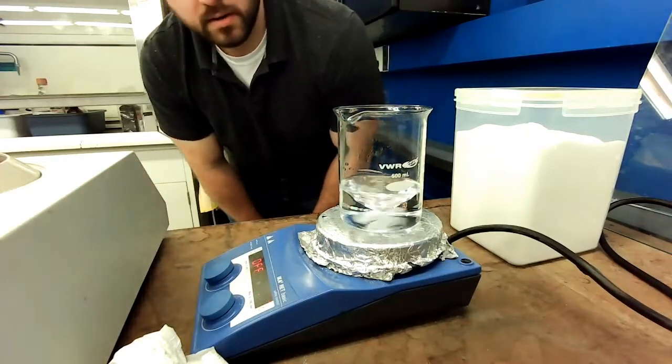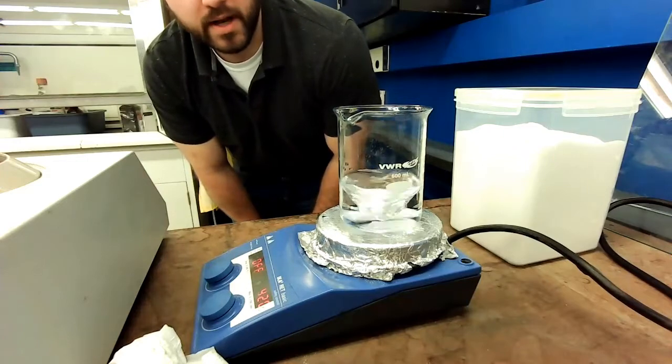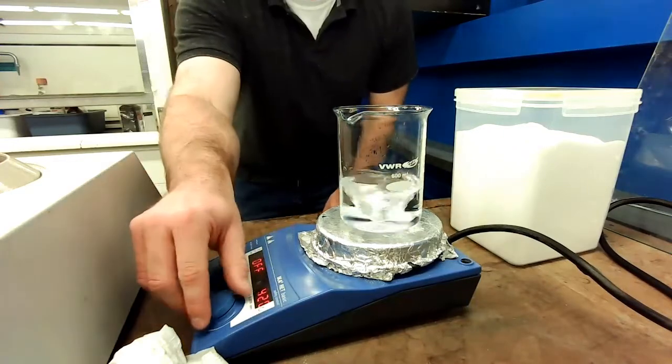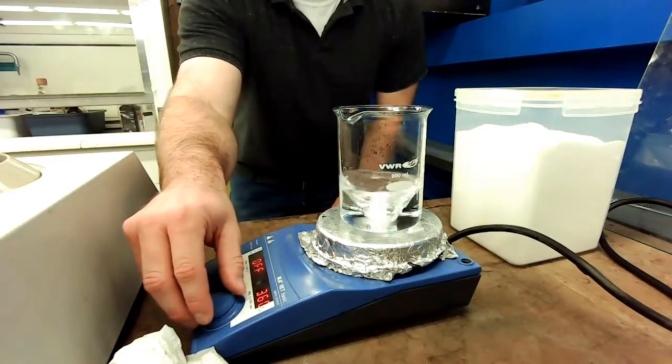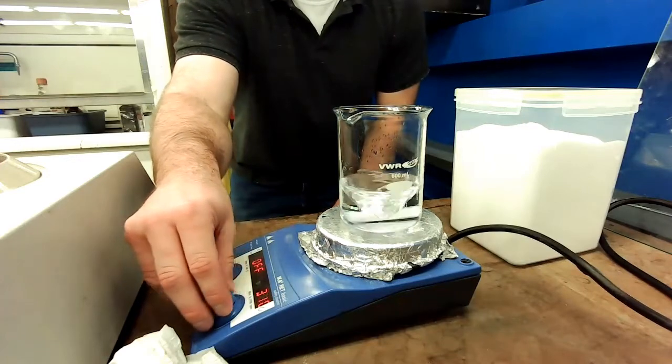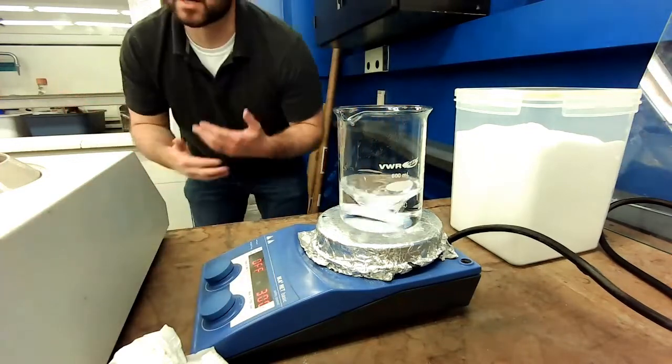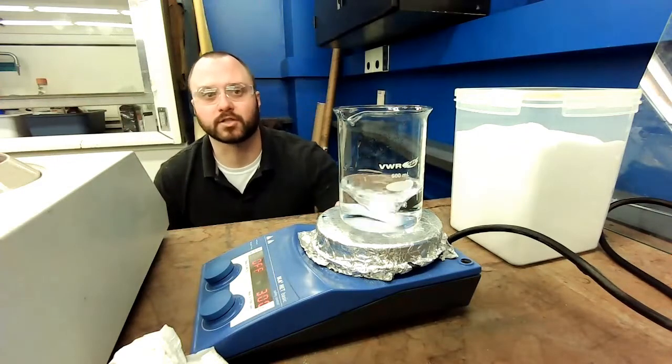So right now it's at 720 revolutions per minute. That might be a bit aggressive. I'm going to turn it down to about 300, okay? And I can play with this. It shouldn't really affect our results all that much, okay?